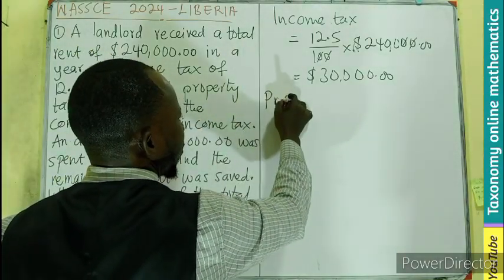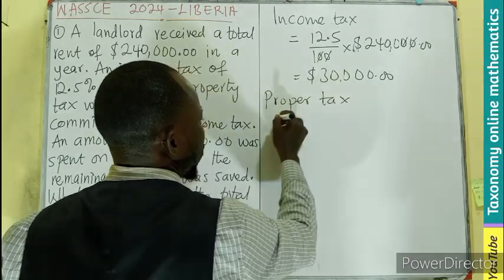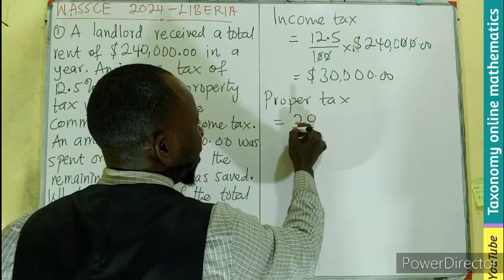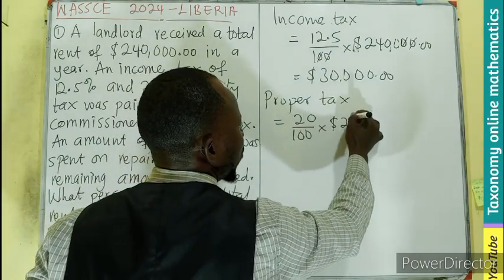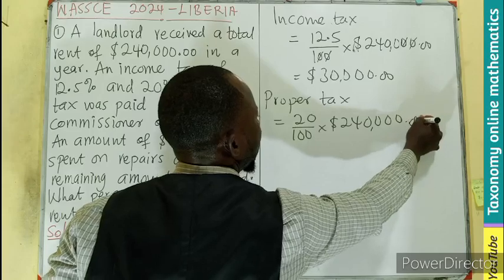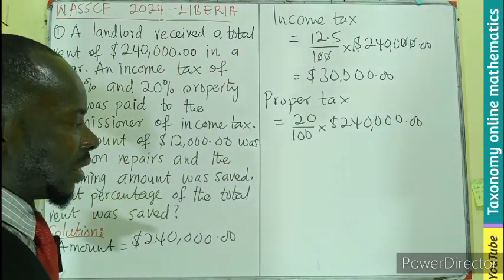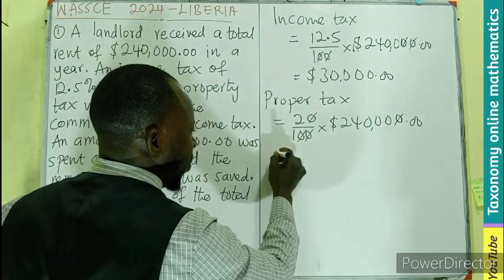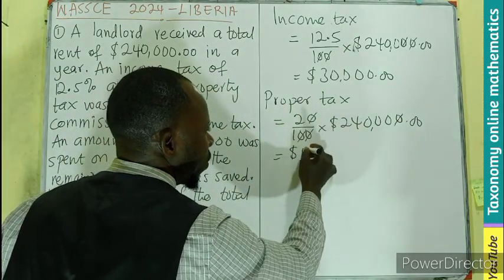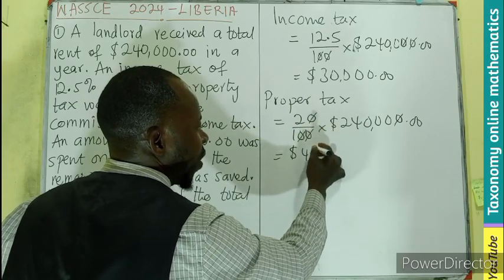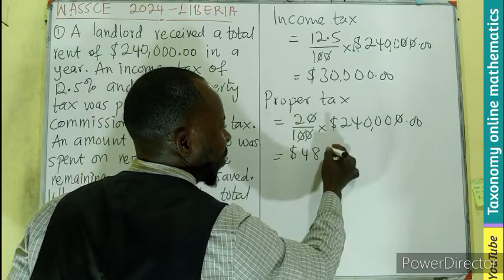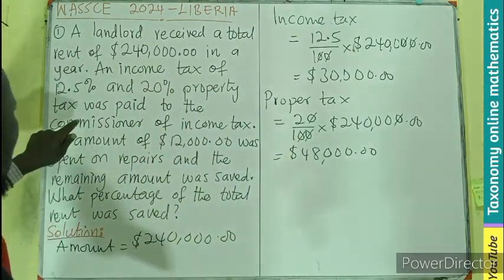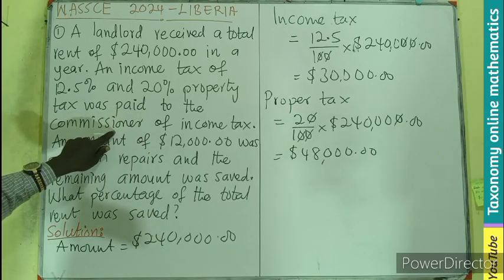The property tax will also be equal to 20 divided by 100 times $240,000. Multiplying 20 by 240,000 and dividing by 100 gives us $48,000. So $48,000 was paid to the commissioner as property tax.